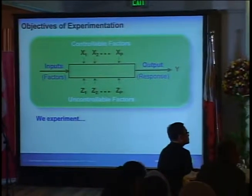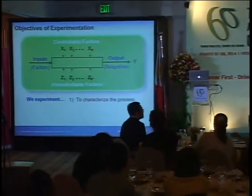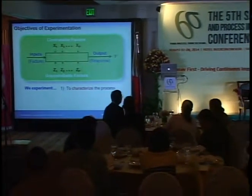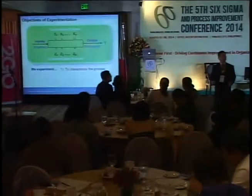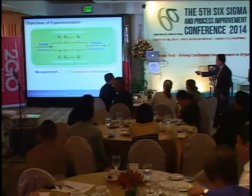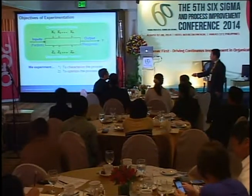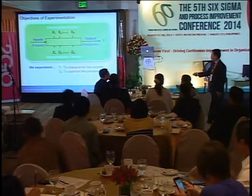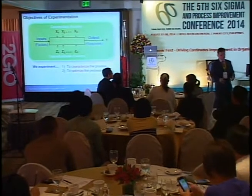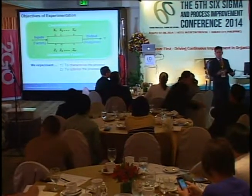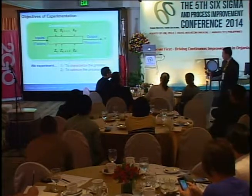We experiment to characterize the process: given many input variables, we'd like to know which among them are important or influential to the output response. We experiment to optimize the process: considering the significant variables, we'd like to know what combination of them to use so that we'll have the best response.